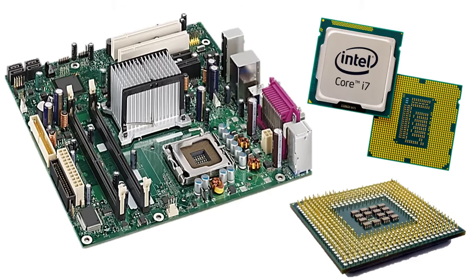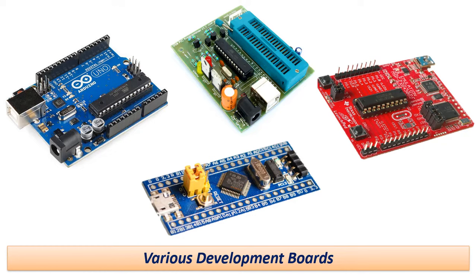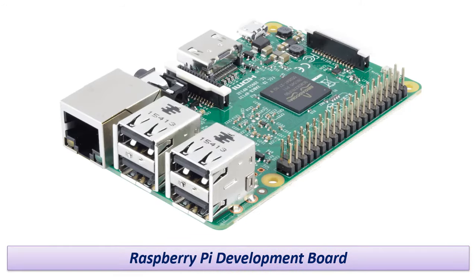The microprocessors in the computers we use today are the microchips produced with the highest technology. These processors, which are produced with today's technology, contain millions of transistors, each of which is approximately 14 nanometers in size. The microcontrollers we use in development boards gather all the necessary units such as the CPU, memory or RAM, and hard disk in a single integration. Microcontroller ICs are programmable, designed to do only one job, and are used in relatively simpler applications. The written program is saved in the microcontroller program memory and runs continuously when the IC is energized. Companies such as Atmel, PIC, and Texas Instruments produce very different kinds of microcontroller ICs.